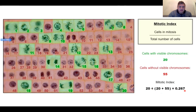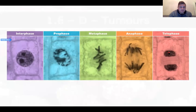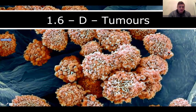This next slide shows the color-coded phases for reference: interphase cells look like this; prophase is where DNA condenses; metaphase has chromosomes aligned in the middle; anaphase has chromosomes being pulled apart; telophase shows chromosomes already separated, forming two distinct cells. That was section C. Now we move on to section D.